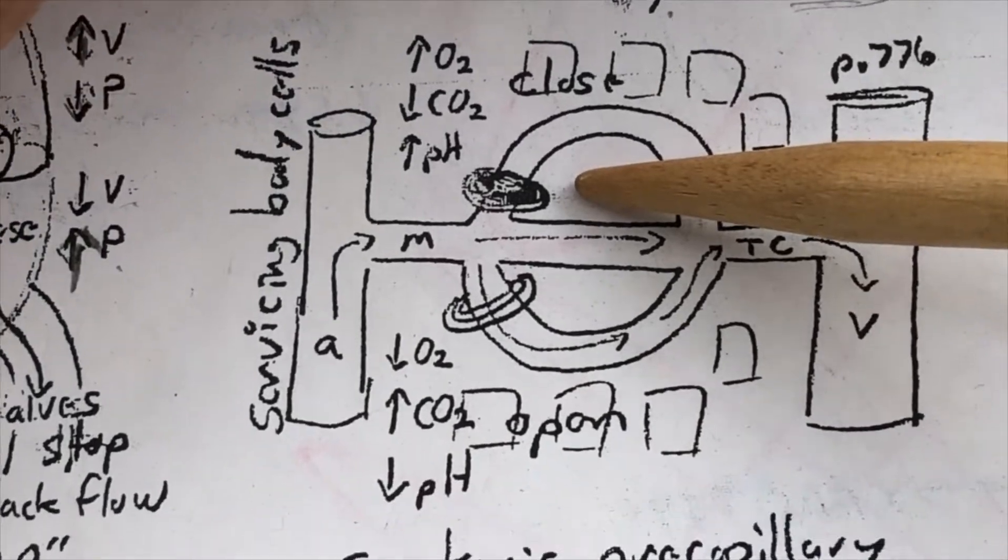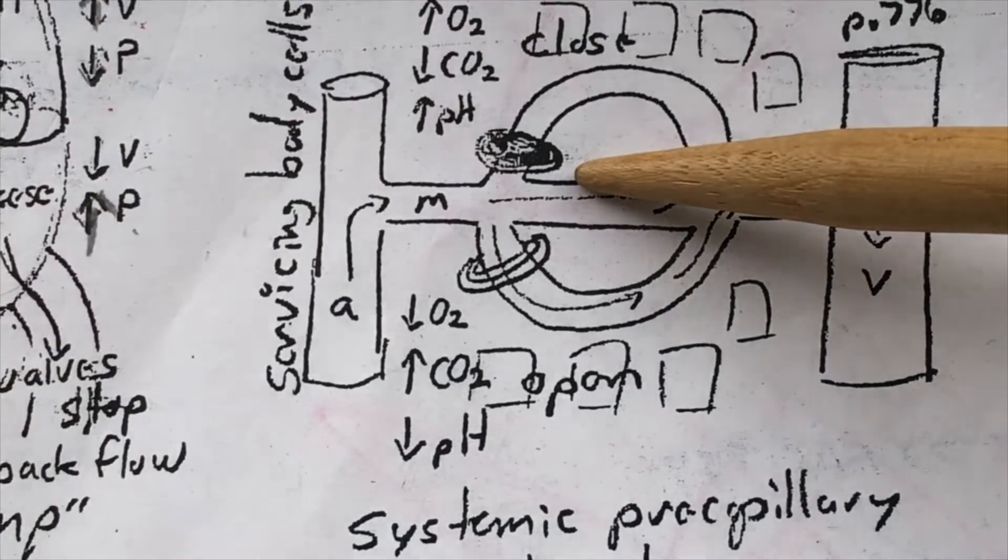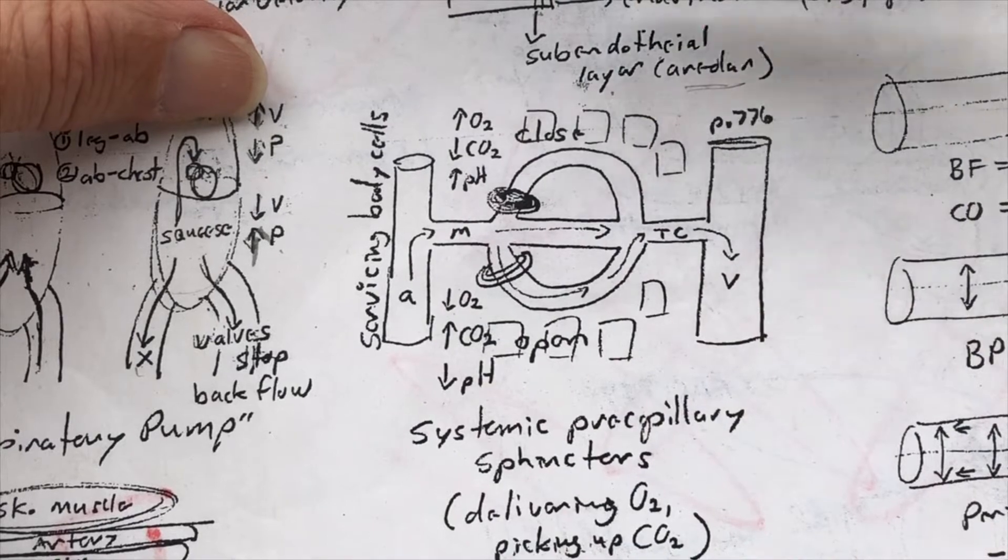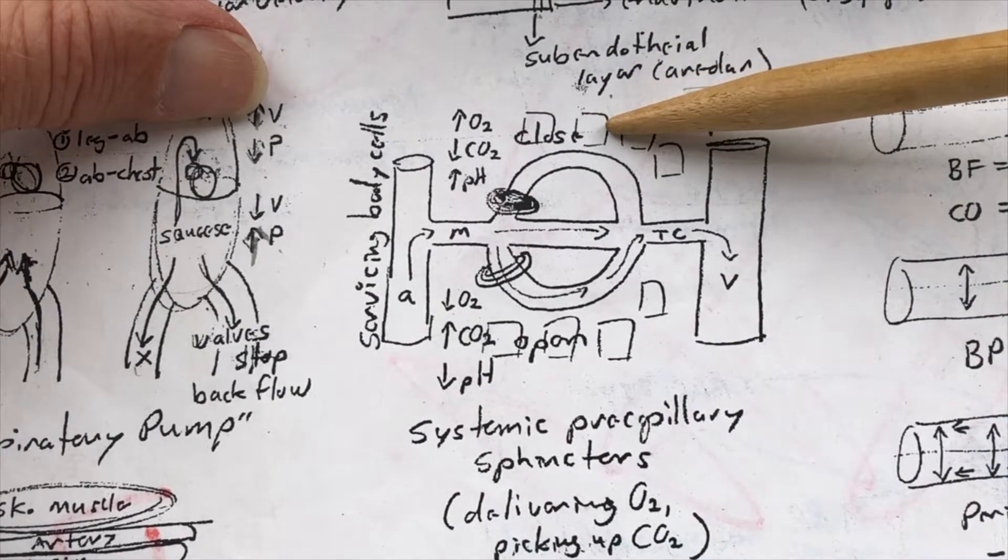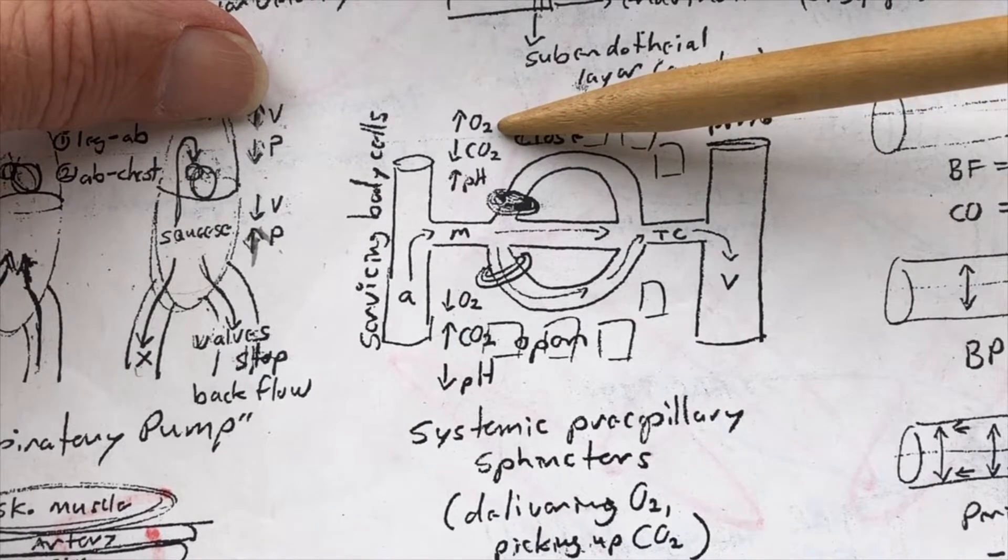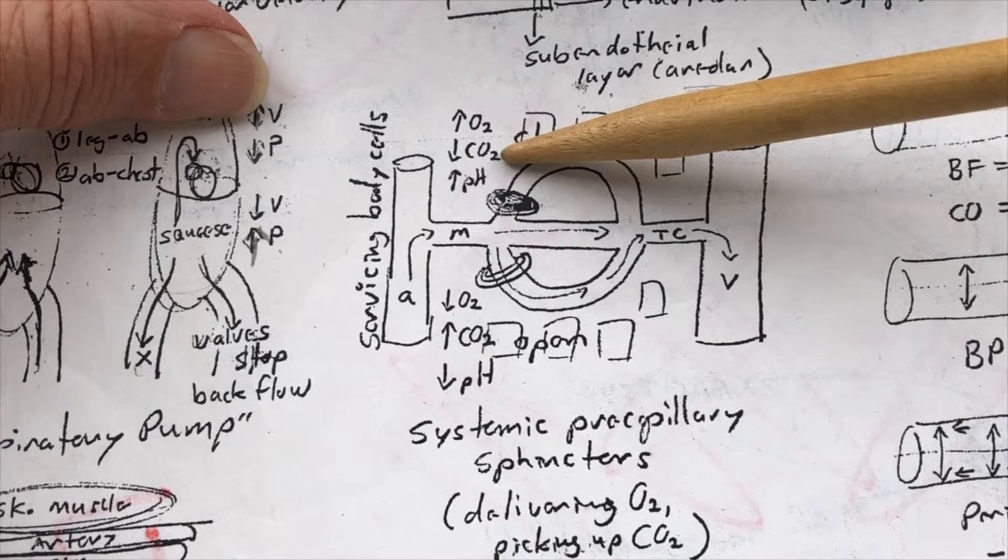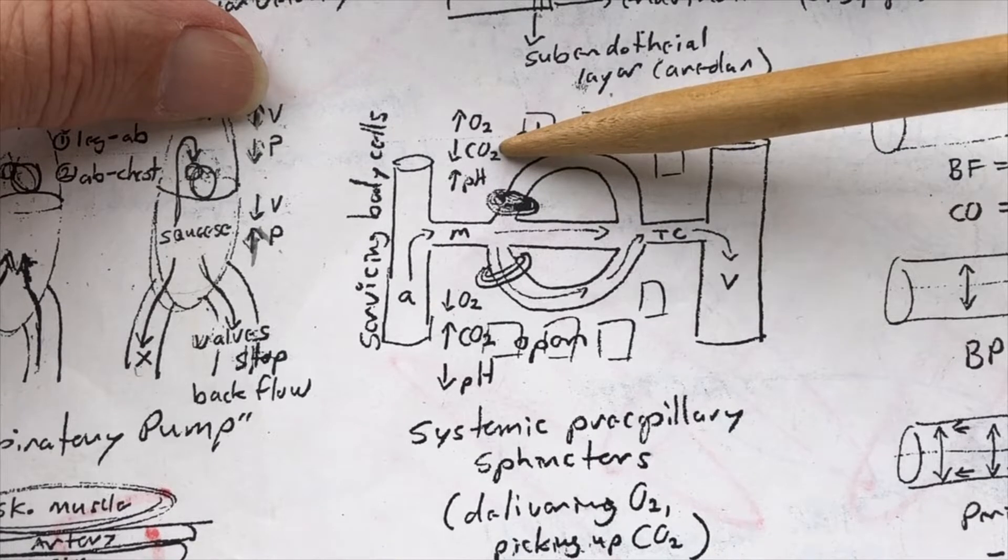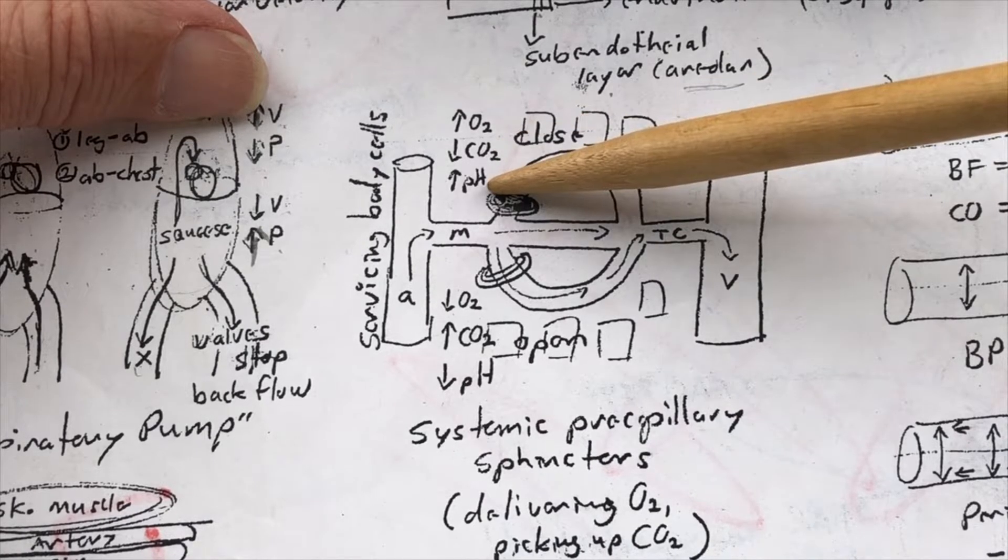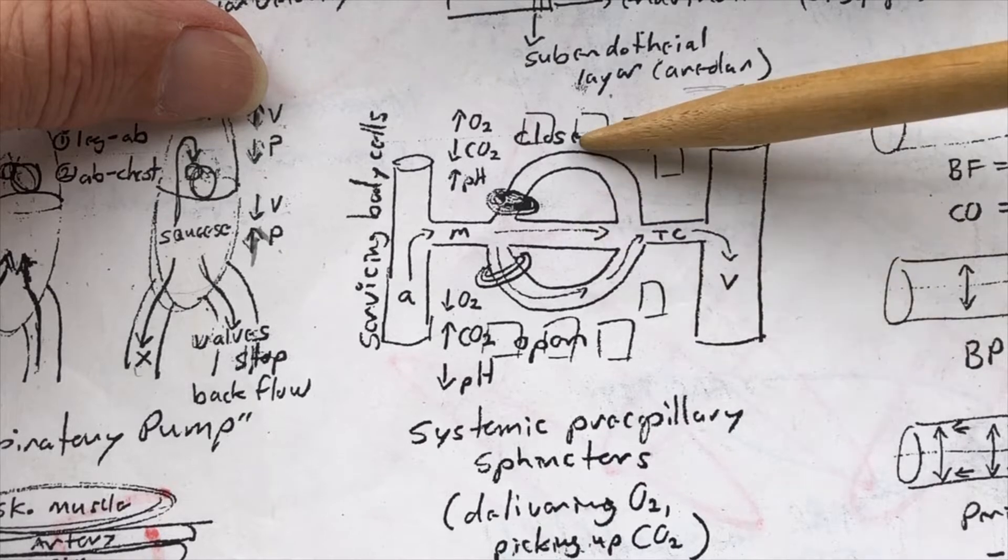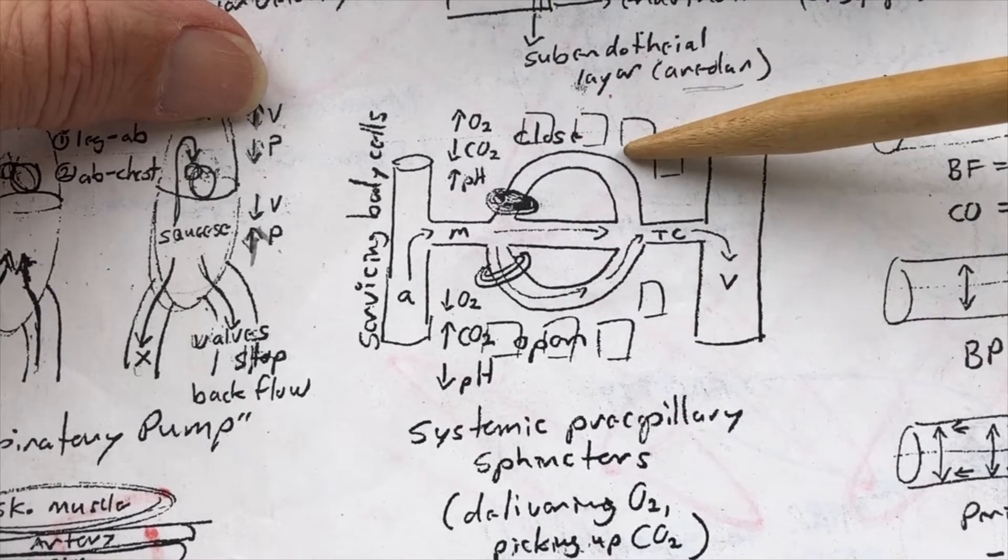And in the systemic circuit, the pre-capillary sphincters respond to the chemistry of the interstitial fluid. Now, next to lazy cells, cells that aren't doing much work, there's going to be oxygen left over from the last blood delivery. There won't be a lot of carbon dioxide because it's not doing a lot of work. And the pH will be relatively high because carbon dioxide plus water gives you acid and there isn't carbon dioxide here to speak of. So, these are the conditions that cause systemic pre-capillary sphincters to close because these cells don't need the blood.